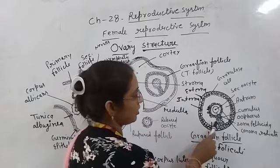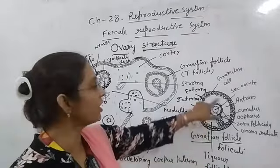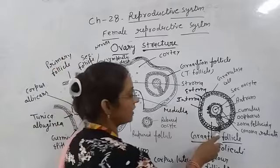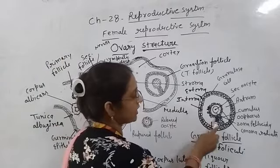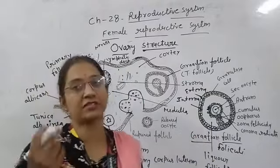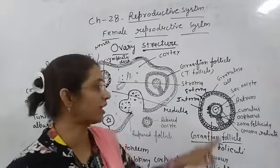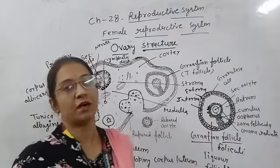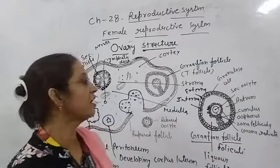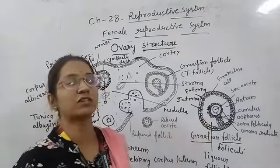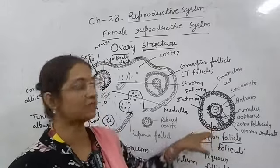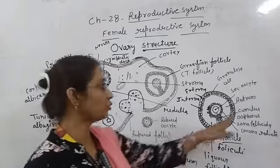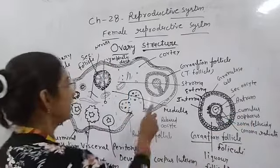Inside the Graafian follicle, the whole cavity is filled with fluid, but in one place there is a stalk-like structure where cells connect the secondary oocyte to the wall of the follicle. This connecting part is called the cumulus oophorus. The secondary oocyte is connected to the follicle wall via the cumulus oophorus.